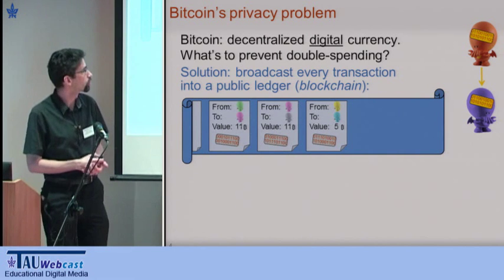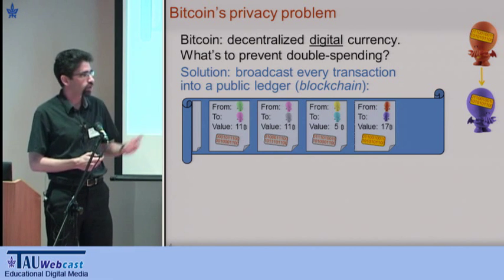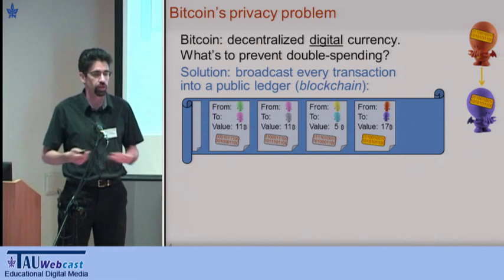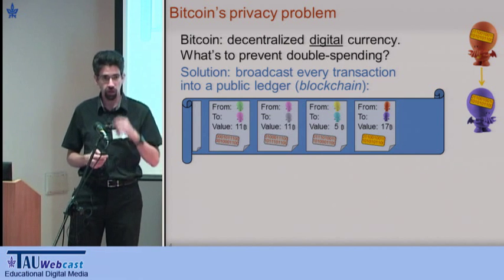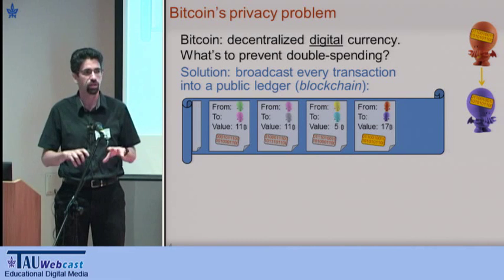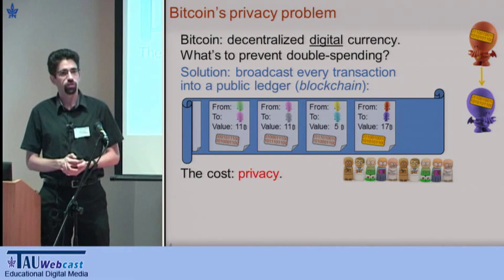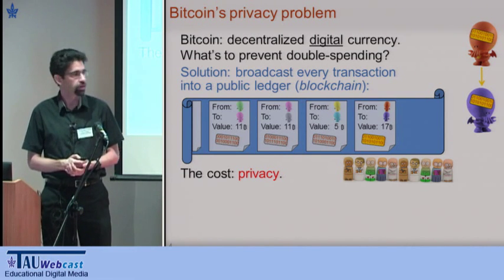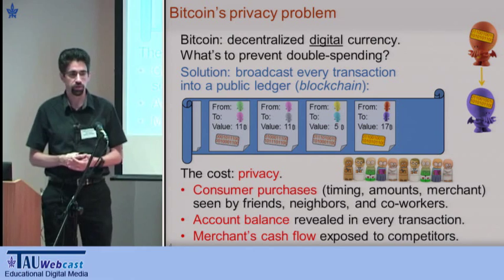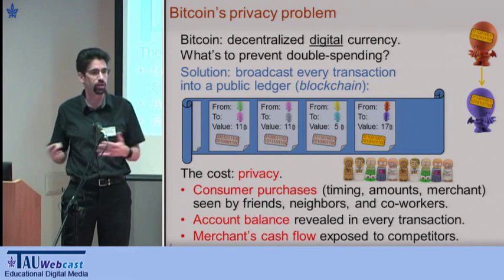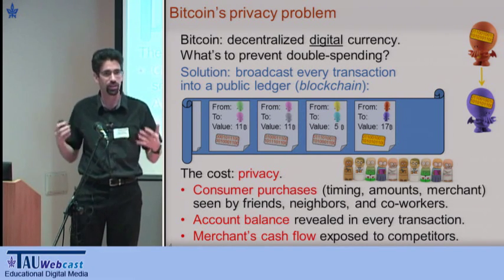Every time there's a payment made, there's a recording of who pays whom and how much. Because every new transaction is appended, they cannot be duplicated — a merchant accepting a payment will make sure it's not a duplicate already in the blockchain. Of course, there are synchronization and consensus issues, as Stefan discussed, but let's abstract those away and assume a perfect ledger. The cost of this is privacy, because we are broadcasting information about every transaction to everybody on the internet.